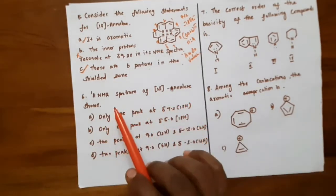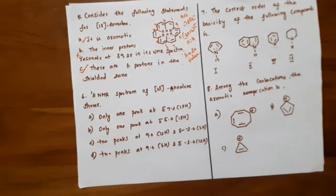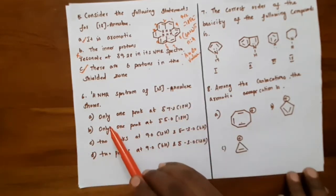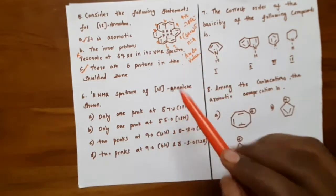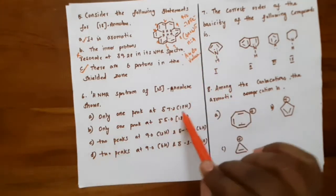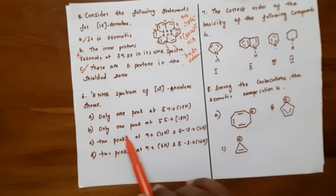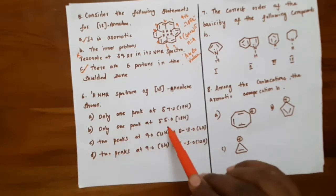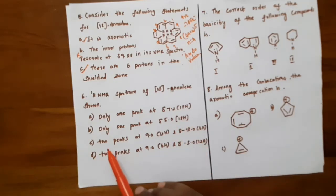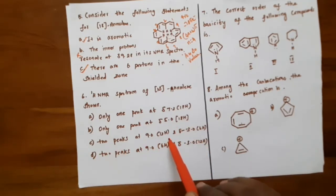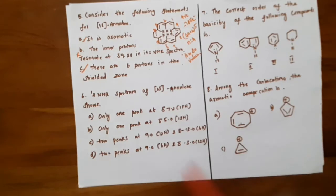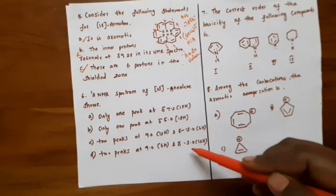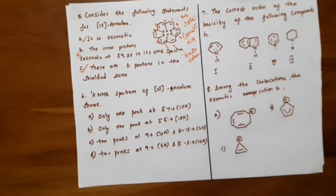The next question regarding 18-annulene: what does the proton NMR spectrum of 18-annulene show? The options given are: one peak at 7.2 for 18 protons; one peak at 5.0 for 18 protons; two peaks at 9.0 for 12 protons and minus 3.0 for 6 protons; and two picks at 9.0 for 6 protons and minus 3.0 for 12 protons.